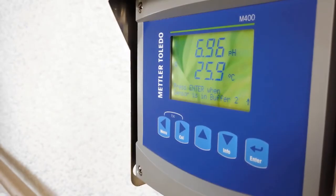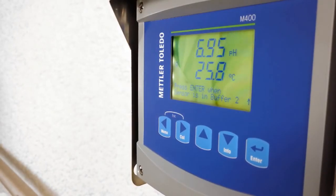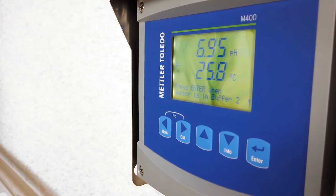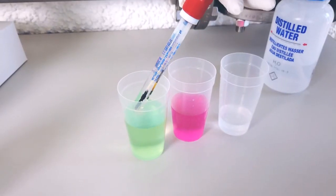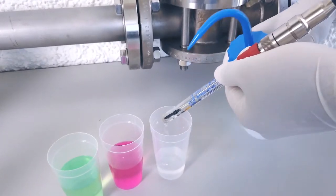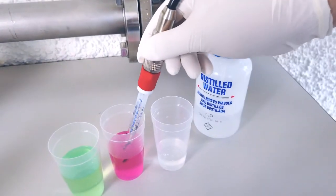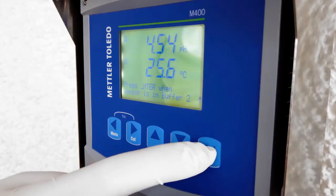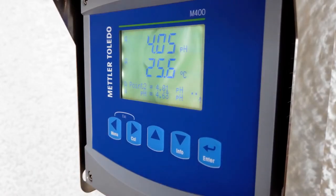Now the transmitter instructs you to put the sensor into the second buffer. In this case, it's pH 4. Remove the sensor from the first buffer, rinse it again with distilled water, pat it dry, and place it into the second buffer. Press the enter button to do the calibration.